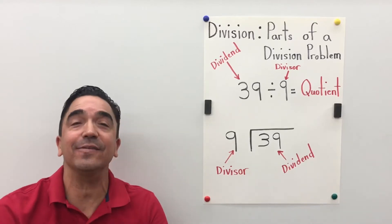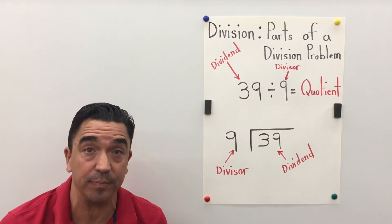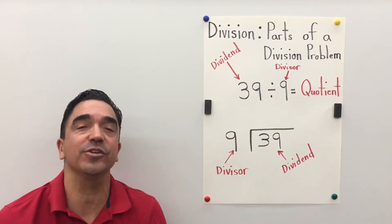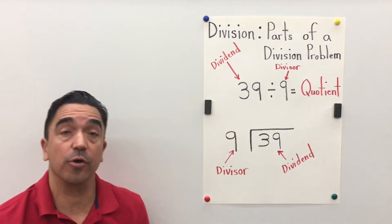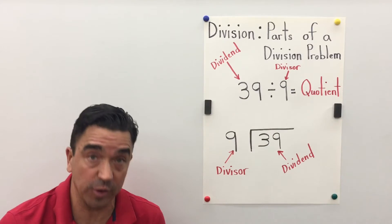Hi there, Coach Mike, and today's lesson is on parts of a division problem. We're going to start with this horizontal division sentence: 39 divided by 9 equals the quotient.